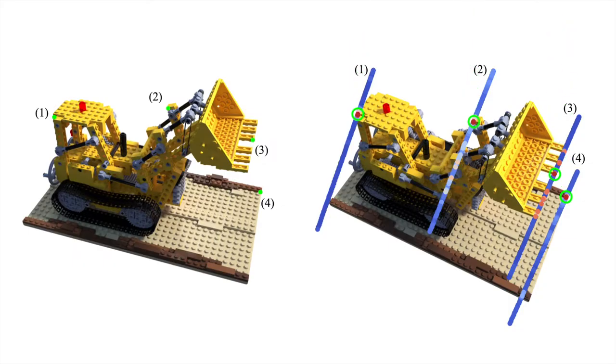Here, we show a visualization of the weights estimated by the network for four target pixels in the Lego scene. As shown by the green circles, the highest weights are attributed to the points that correspond to the target pixel.